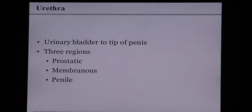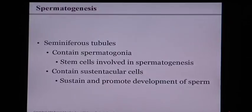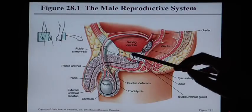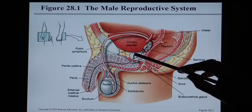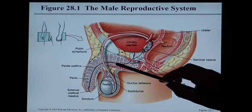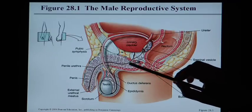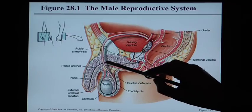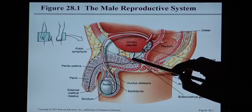The urethra has three regions: the prostatic urethra, which passes through the prostate; the membranous region, which is between the prostate and the penis; and the penile urethra, which runs through the penis.